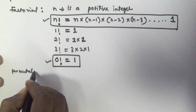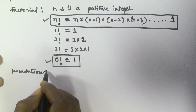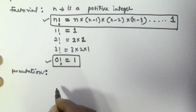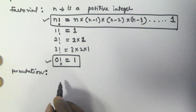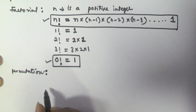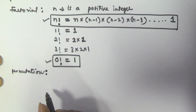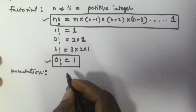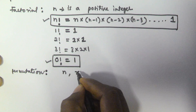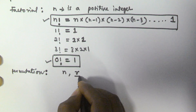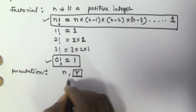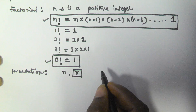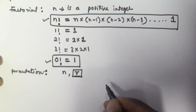In most cases, we use the terms permutations and arrangements interchangeably. Permutation is all about taking a given number of things, selecting some from them, and arranging them. For example, there are n things and we are taking r things out of n and arranging them in a certain order.